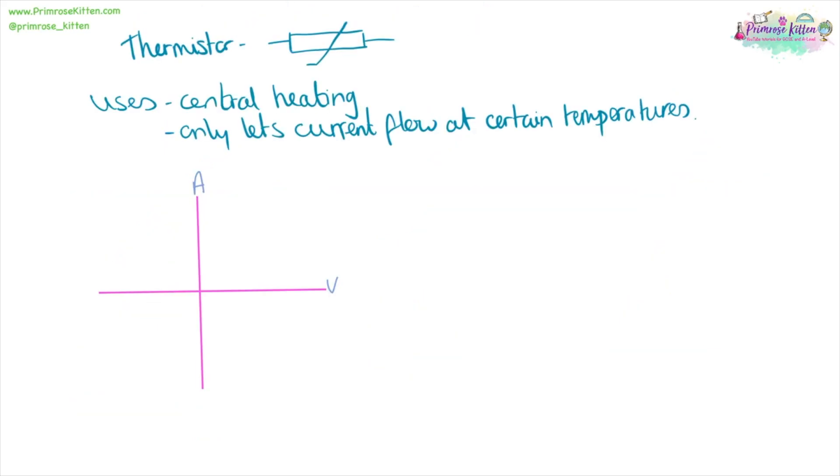A thermistor is used in stuff like your central heating and it's only going to let current flow at certain temperatures. For example, at a high temperature, our graph looks like this.